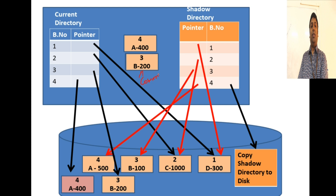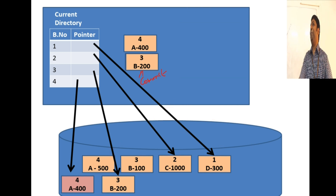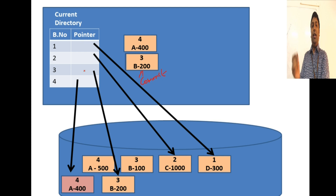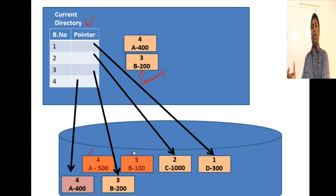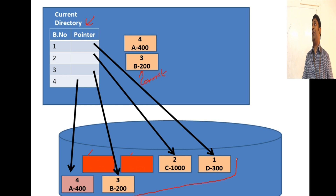The transaction then issues a commit. Once the transaction is complete, the shadow directory is discarded because we have a successful transaction. Any pages not pointed to by the current directory - the old blocks A and B - are deallocated for other purposes. Now you have the current directory pointing to the updated set of blocks, which becomes the stable state of your database.